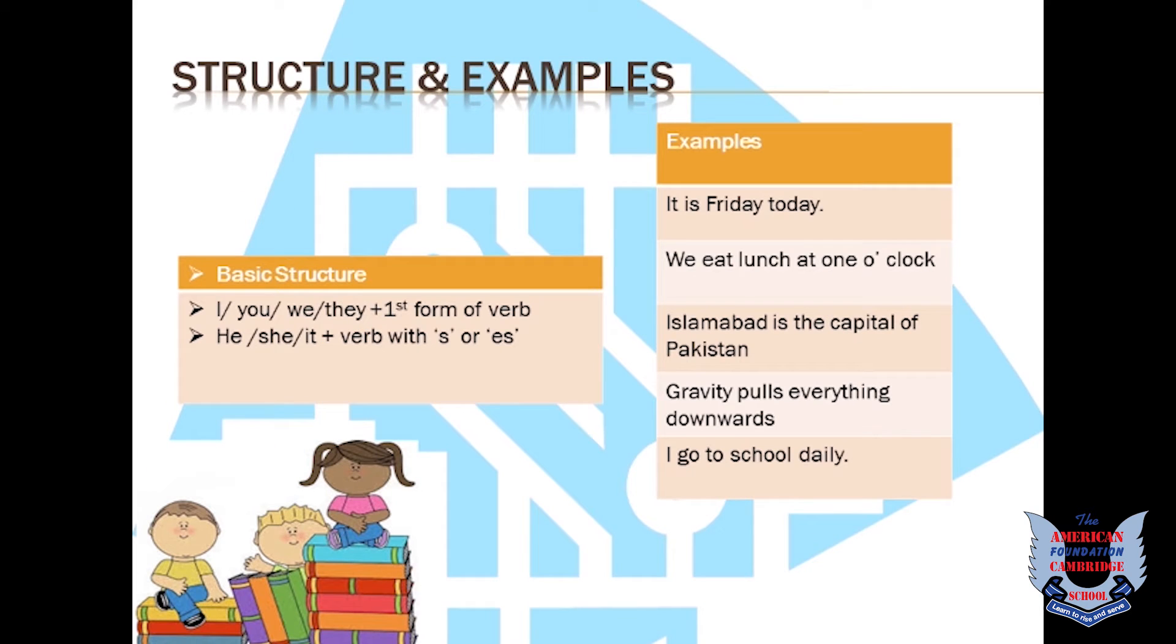A simple structure of present tense is the use of first form of verb with I, you, we, and they. As you can see in the example, I go to school. Go is the first form of verb. Similarly, we eat lunch at one o'clock. We is the subject and we are using the first form of verb eat.